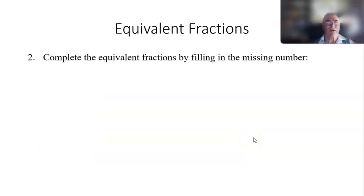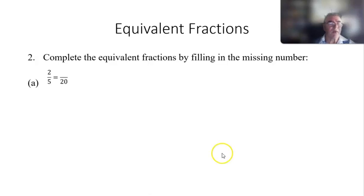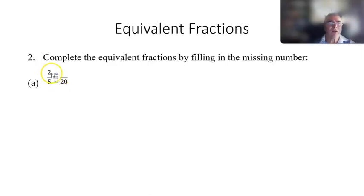Now let's complete equivalent fractions by filling in the missing number. I've got two fifths and I want to find out — if I cut the shape into 20 pieces instead of 5, how many would be colored in? We look at how we change the 5 to a 20: 5 times 4 is 20. For equivalent fractions we have to do the same to the numerator, so we multiply that by 4 as well — 2 times 4 is 8. So 2/5 is the same as 8/20.